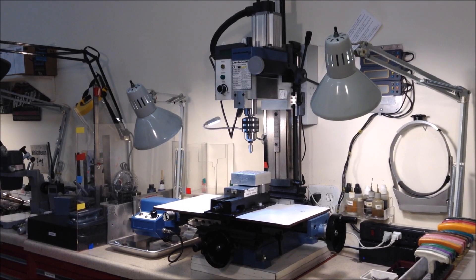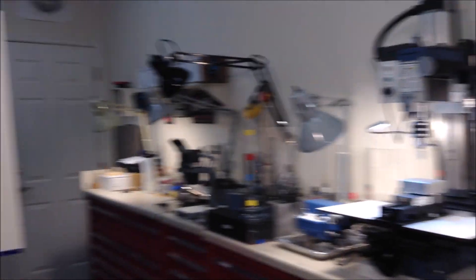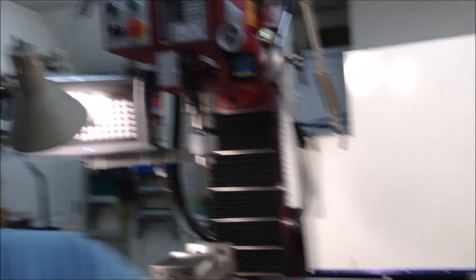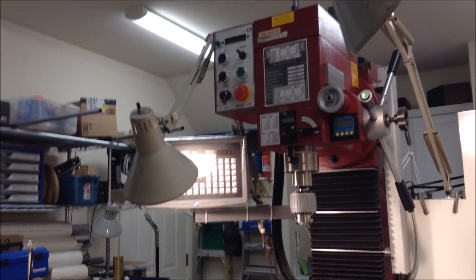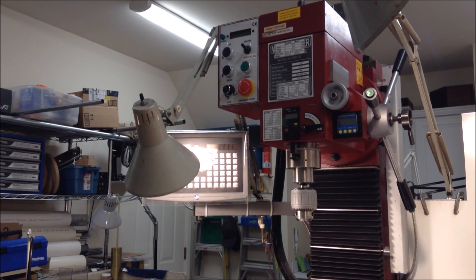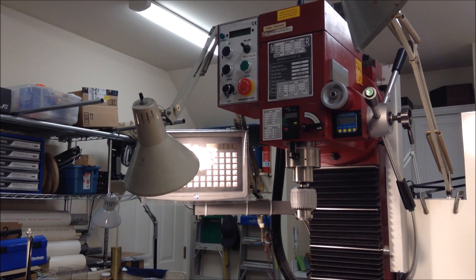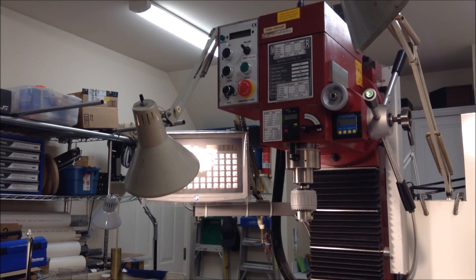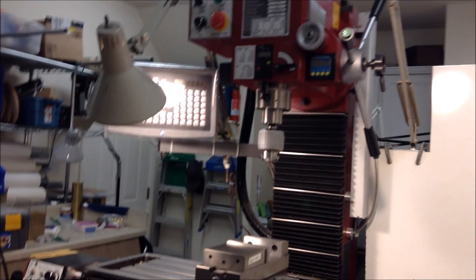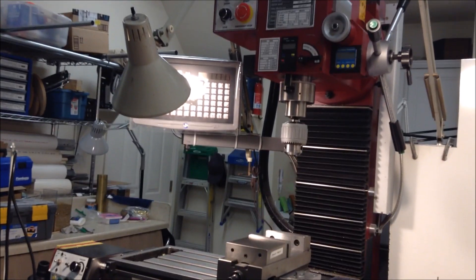So the mini mill sits over here on that bench, and then if we swing the camera around over this way, here's the SX4 mill, which is quite a lot larger, maybe three or four times larger, both in size and in weight, but it's great for those larger size jobs that you can't do on the mini mill.